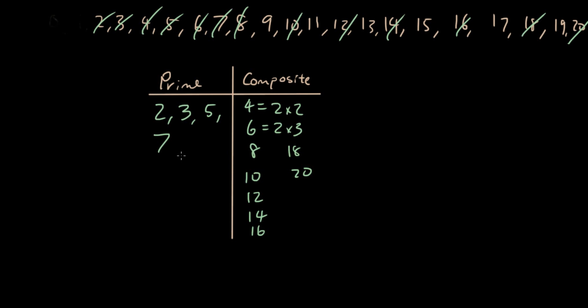Okay, so 7, 9 is also a composite number because 9 is equal to 3 times 3. So 9 is a composite.